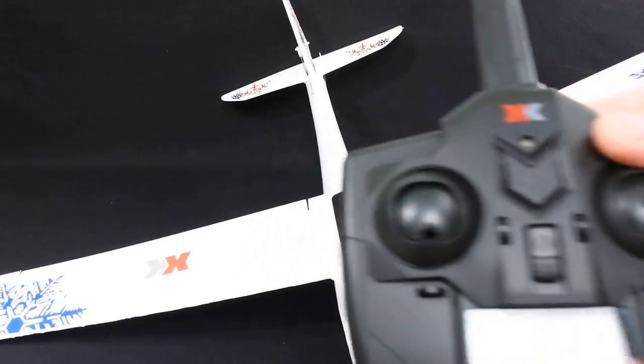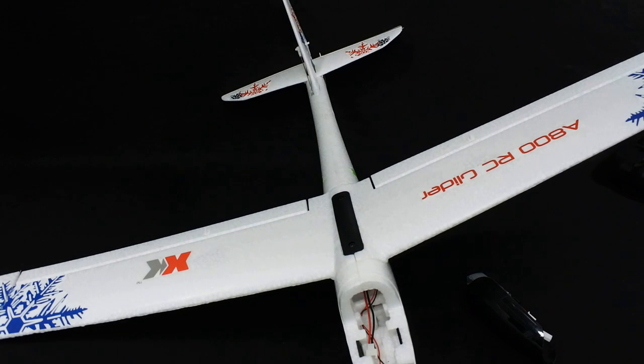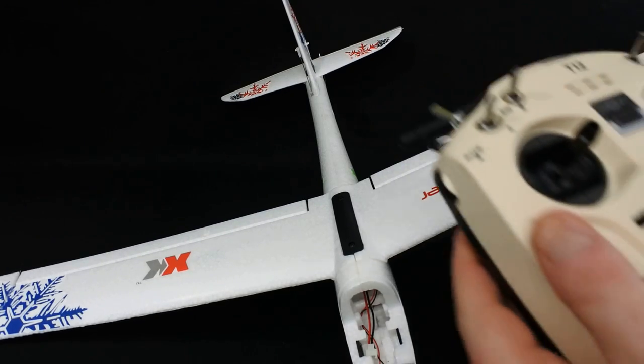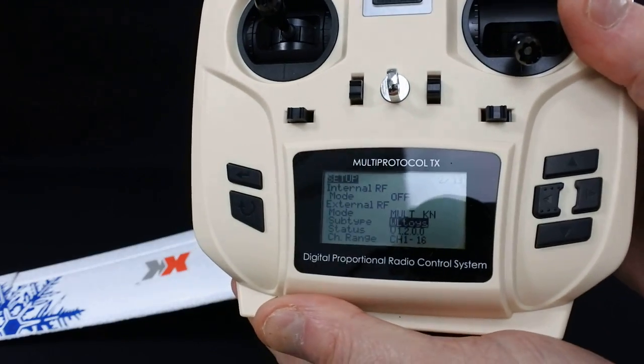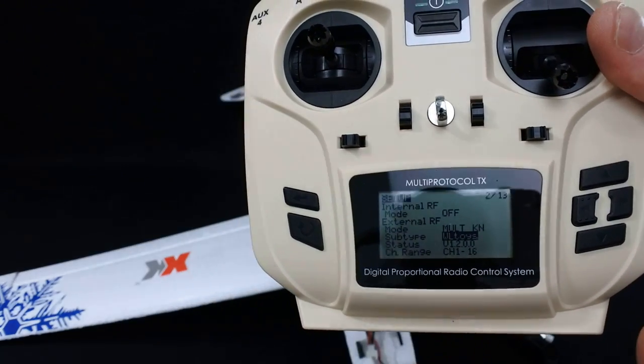So XK have a division of WL Toys. So this controller is used for a lot of things, hence why it says that on it. But this will not run on the Futaba protocol. So what you need to do is select KN, and then make sure it's on WL Toys, and bind it to it that way.